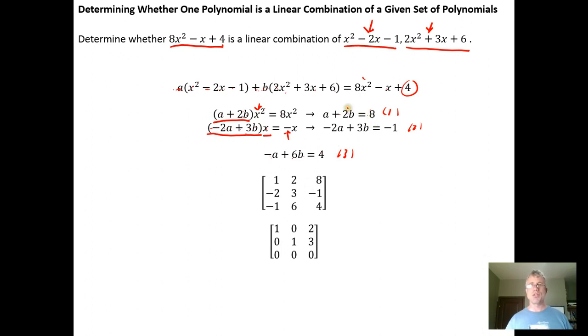So we wind up with 3 equations in 2 unknowns, A and B. And that means we can construct an augmented matrix and solve it to figure out what A and B are, if A and B exist, if there is actually a solution.